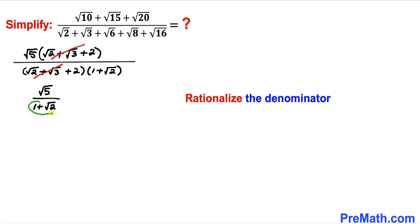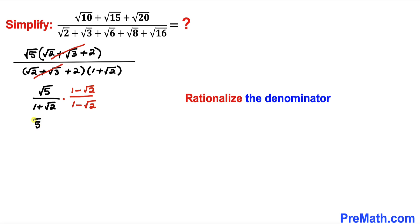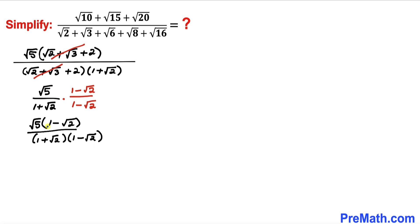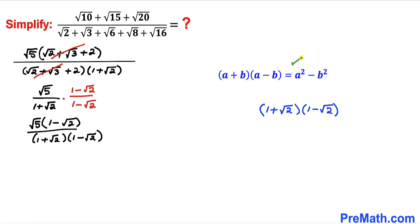Now let's rationalize the denominator. We multiply by the conjugate (1 − √2) over (1 − √2). Multiplying numerator and denominator gives √5(1 − √2) over (1 + √2)(1 − √2). Let's recall the identity: (a + b)(a − b) = a² − b².